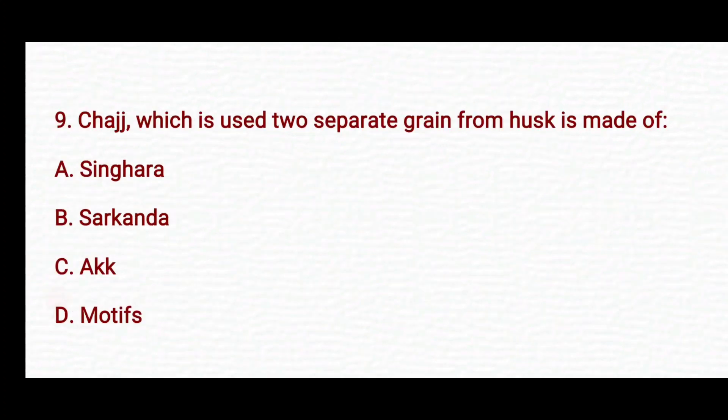Another question: Shaj, which is used to separate grain from husk, is made from? Option A: Singhara. Option B: Sarkanda. Option C: Aq. Option D: Motifs.